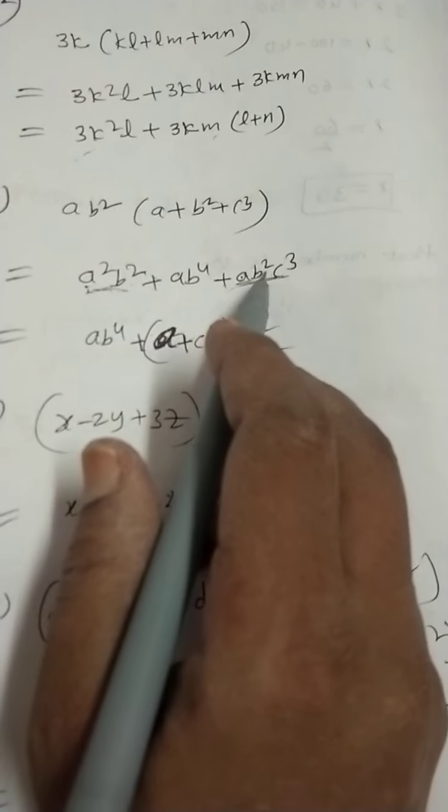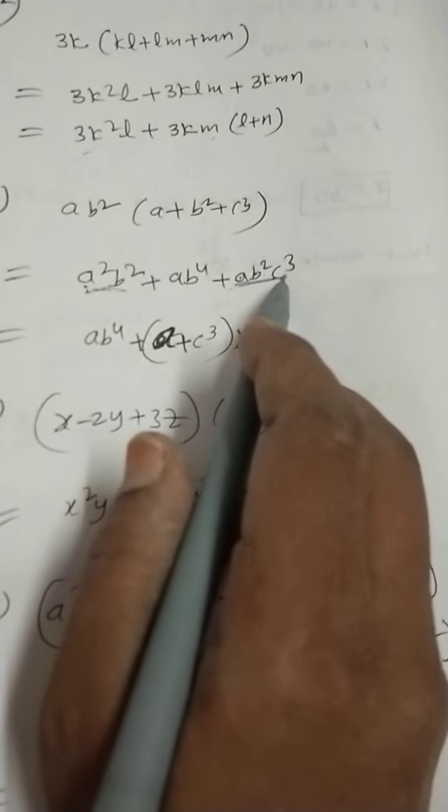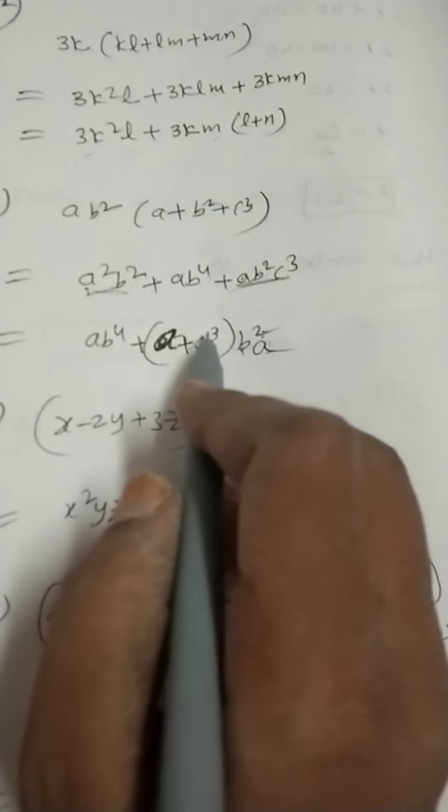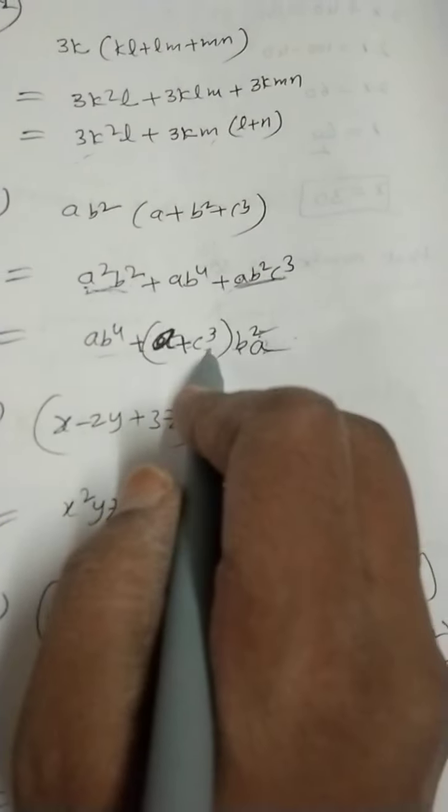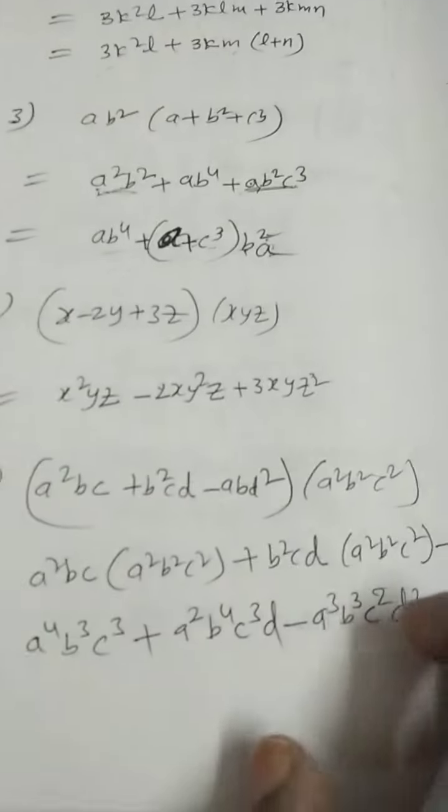Here, 1a, here, 1a will be. So, 1a common, we can take. a into b² we can take common. Remaining here, a will be. Plus, here, a b² we took common now. Remaining c³. If you want to write this step, you can write. Otherwise, leave it. Up to here only, you can write.